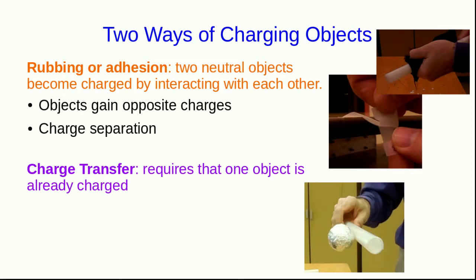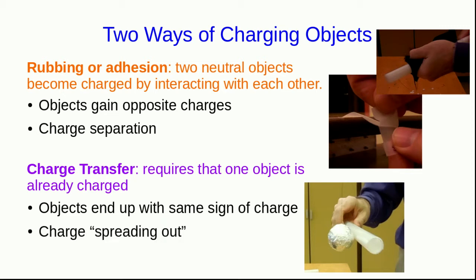We've started with everything neutral and we've separated some of the positive out from the negative so that there's a surplus of positive on one object and a surplus of negative on the other object. But charge transfer is totally different. Both objects end up with the same sign of charge, because what's happening is that an object that already has charge gives up some of its charge to the other object. In other words, this is a process of charge spreading out.